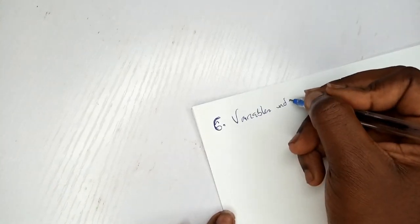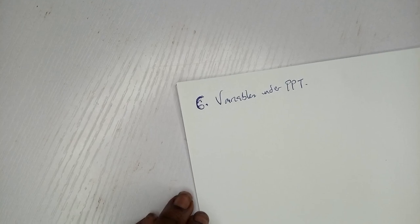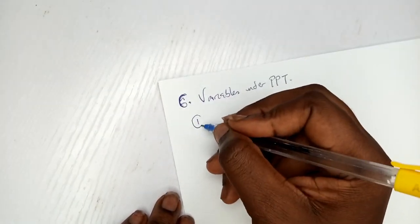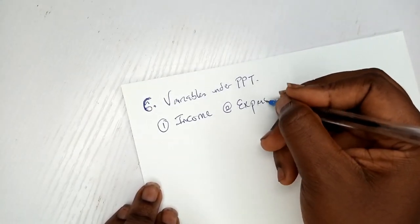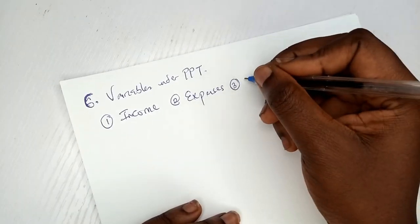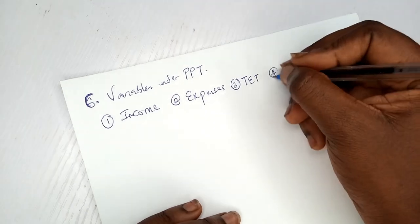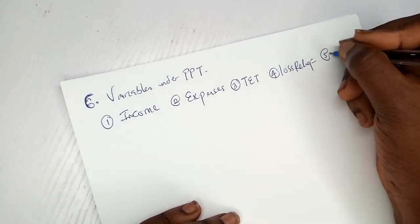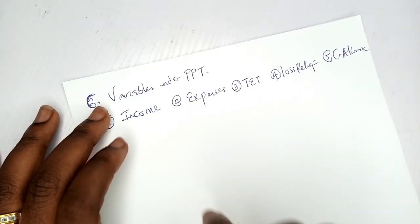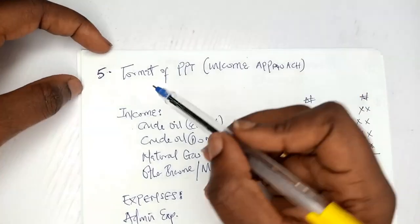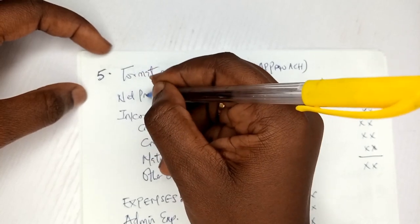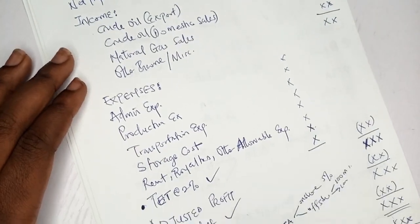Now the second format — the net profit approach. You start directly from the net profit given, since income and expenses have already been netted. You then adjust: add back depreciation, general provisions, excess rent, and all disallowable expenses. Once you complete your adjustments, you arrive at adjusted profit, then proceed through loss relief, assessable profit, capital allowance, and finally chargeable profit — just as in the income approach.